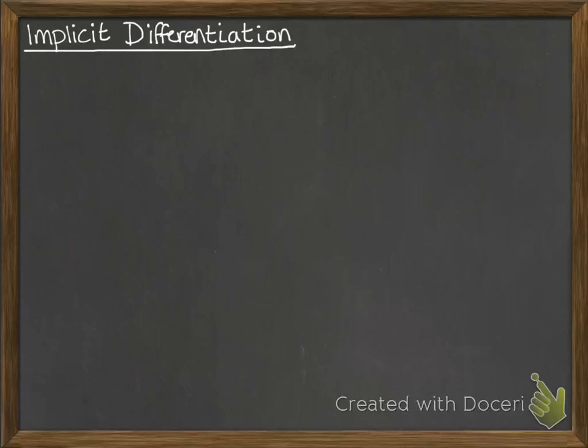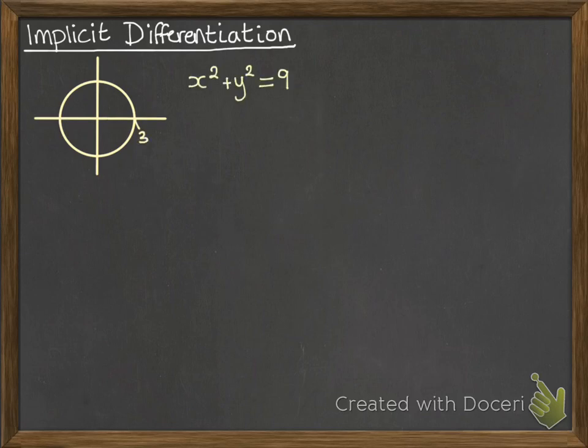This video looks at what's called implicit differentiation, or differentiation of an equation that is defined implicitly. Now consider the equation of a circle, something like this. So here we don't have a straightforward y equals something of x. We have a combination of the x and the y still related to each other in some way.